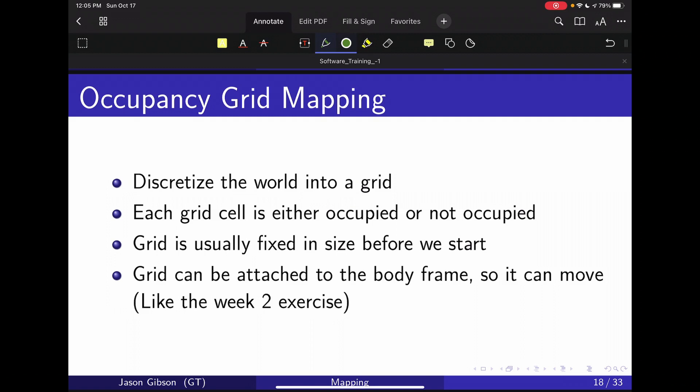To do occupancy grid mapping, we discretize the world into a grid, and at each grid cell we try to represent whether it is occupied or not, which essentially means whether there is an obstacle there or not. Can we drive over it? Can we not drive over it? Now this grid is fixed in size before we start. It doesn't grow and shrink over time typically. There are variations where we tend to do this, but for our problem we won't.